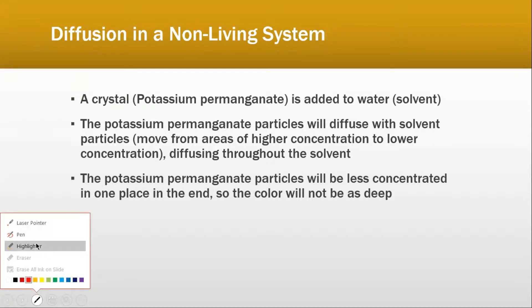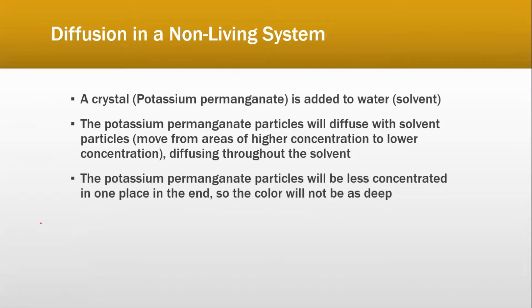First, we have the practical for diffusion in a non-living system — not plants or humans, just a basic laboratory practical. For diffusion, we add a crystal of potassium permanganate (KMnO₄) to water. This crystal is initially a dark purple or violet color, and it is added to a beaker of water.